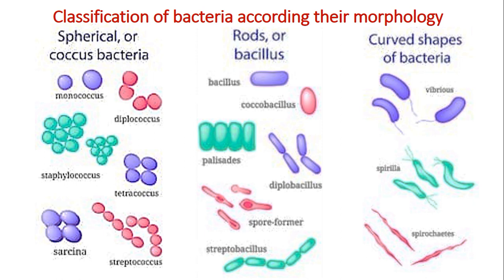The next slide is the classification of bacteria according to their morphology, divided into three big groups: spherical or coccus, rod-shaped, and curved. Spherical bacteria are classified by position in the smear: monococcus (single cells), diplococcus (in pairs), staphylococci (grape clusters), tetracocci (four cells together), sarcina (four cells in packets), and streptococcus (chain). Rod-shaped bacteria are classified as coccobacillus, palisades, diplobacillus, spore-forming, and streptobacillus. Curved-shaped bacteria have various forms such as comma, spiral, and twisted.